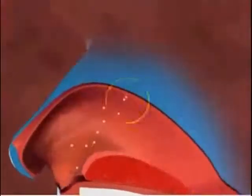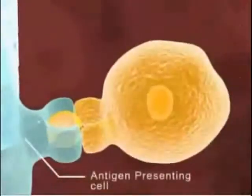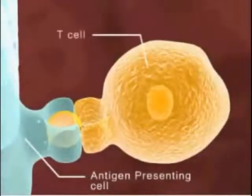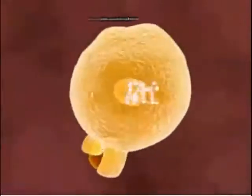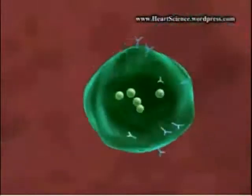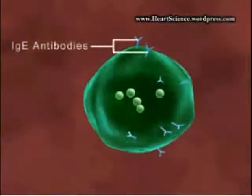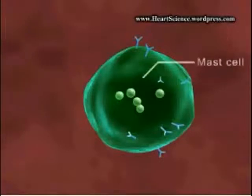On first exposure, the inhaled allergen enters the mucous membrane lining the nasal passages, where it is taken up by the antigen presenting cell, which presents it to the T-cells. These T-cells activate the B-cells to release substances called IgE antibodies against the allergen. These IgE antibodies sit on the surface of the mast cells.